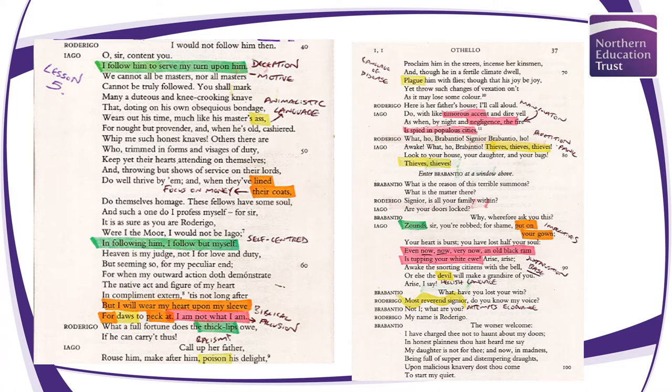Roderigo says, 'What a full fortune does the thick lips owe if he can carry it thus?' — outright racism revealing it's not just Iago but systemic. Iago says, 'Call up her father, rouse him, make after him, poison his delight.' References to poison appear throughout the play. Initially subtle, they grow as the play progresses, much like the poison Iago spreads. Shakespeare uses this technique in Macbeth too, with swelling and gall.